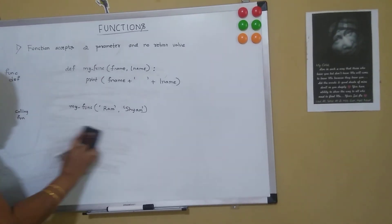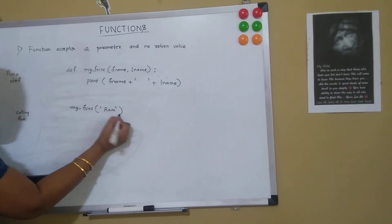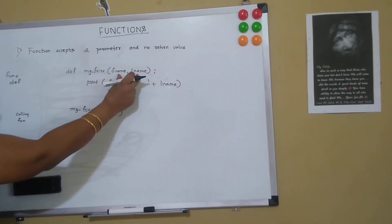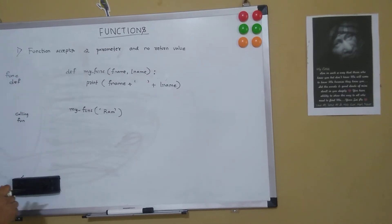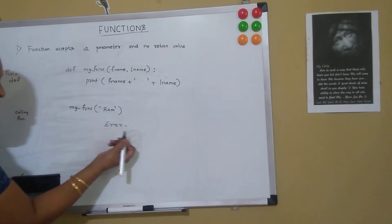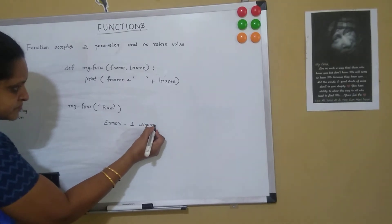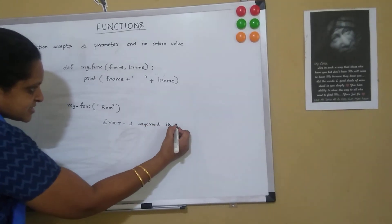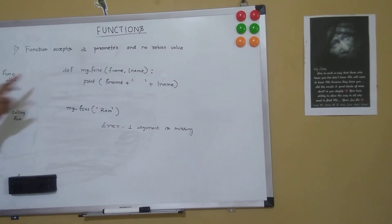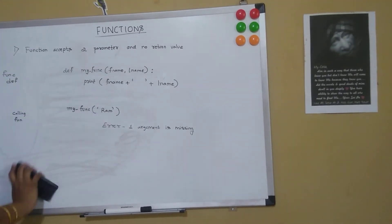Now, if I only pass 'ram' to the function, the number of parameters here is 1, whereas the function is expecting two parameters to be passed. So when I execute this program, I get an error indicating one argument is missing. So it does not get executed. This was the function accepting two parameters.